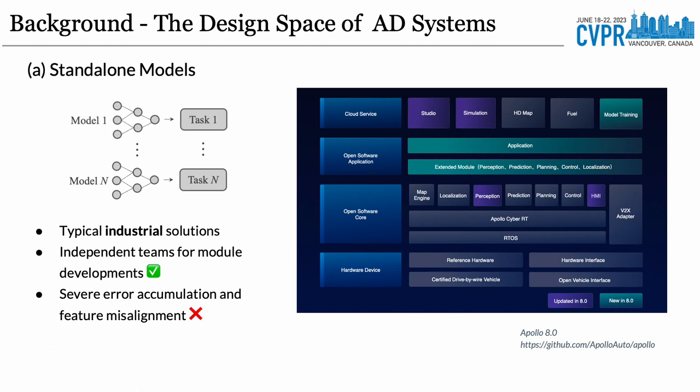Our research begins with an investigation of the current design space of autonomous driving systems. A typical industrial solution would be cascaded standalone models, where each module is developed by individual teams and trained separately, leading to severe error accumulation and feature misalignment.